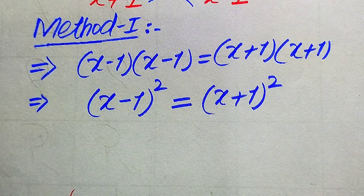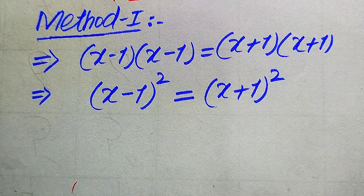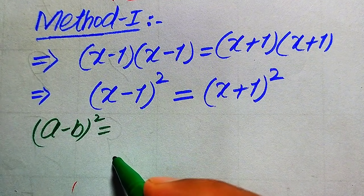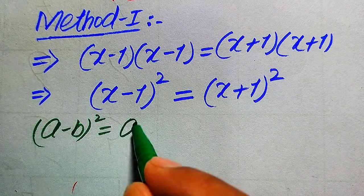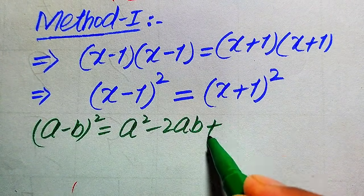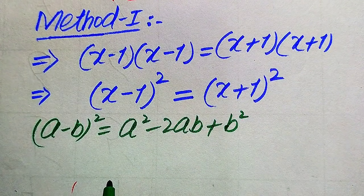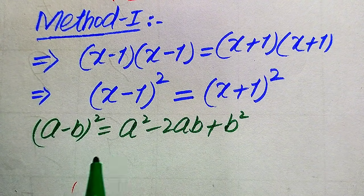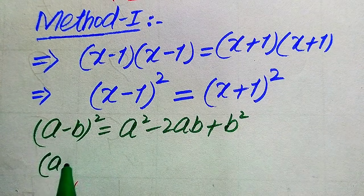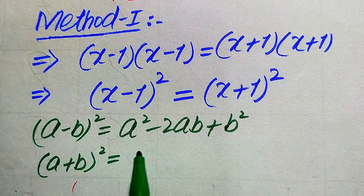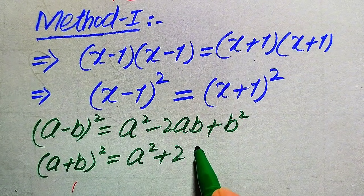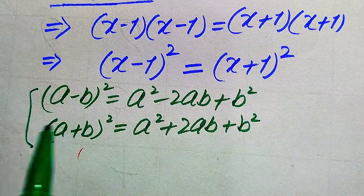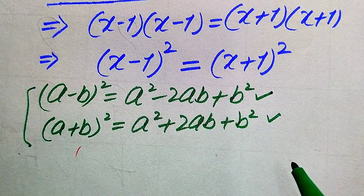To find the roots, we use algebraic formulas: (a - b)² = a² - 2ab + b², and (a + b)² = a² + 2ab + b². We apply the first formula to the left-hand side and the second formula to the right-hand side.